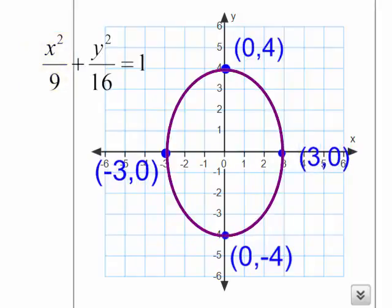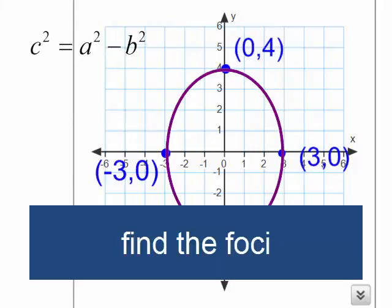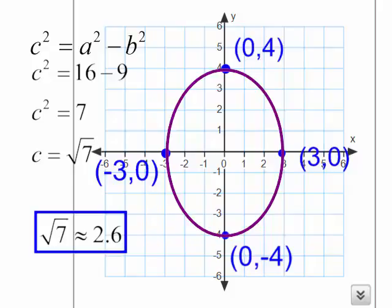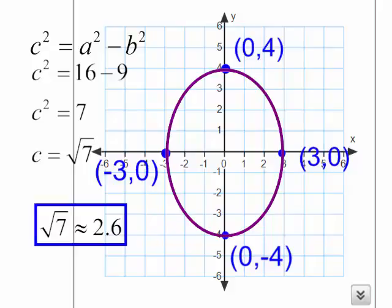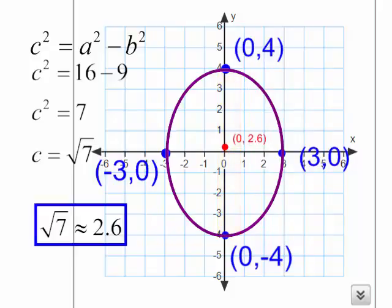What about my foci? Remember from the previous video, we learned that we could find the foci by c squared equals a squared minus b squared. So c squared is going to equal 16 minus 9, which means c squared equals 7, and c equals the square root of 7. The square root of 7 is approximately 2.6. The foci is on the major axis, and this is a vertical ellipse. I will go up 2.6 and down 2.6.